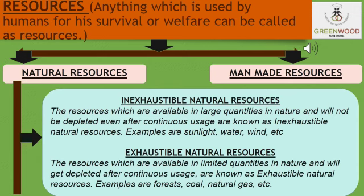Exhaustible natural resources are those present in nature in a very limited manner — they can be finished or exhausted by human activities. Examples include forests, wildlife, and minerals like coal and petroleum. These are the fossil fuels we are going to study further: coal, petroleum, and natural gas.